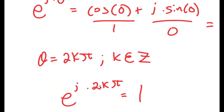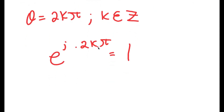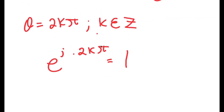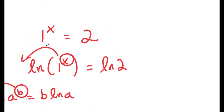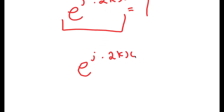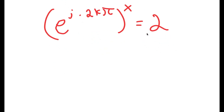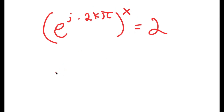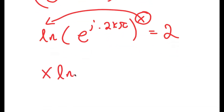Because all we did was substitute theta for 2kπ into this same expression. So now, because e to the power of i·2kπ is equal to 1, we can substitute this into our first equation, which started with 1 to the power of x equals 2. That gives us e to the power of i·2kπ, to the power of x, is equal to 2. And now, with this, I'm going to take the ln on both sides. So I have ln of e to the power of i·2kπ to the power of x is equal to ln(2), and I'm going to bring x down using the property of natural logarithms, giving x times ln(e to the power of i·2kπ) equals ln(2).